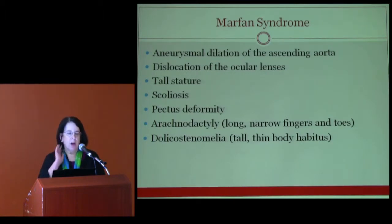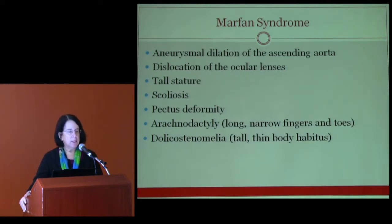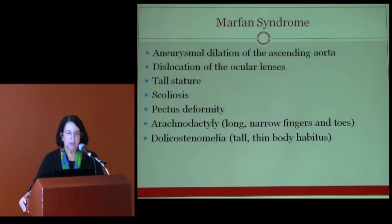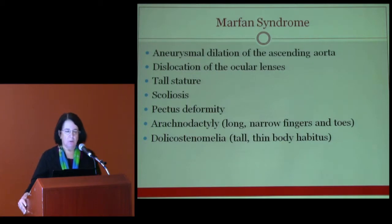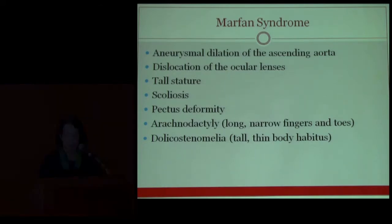Marfan syndrome is characterized by aneurysmal dilation of the ascending aorta, which may lead to dissection and rupture, and without appropriate intervention may be fatal in early to mid-adult life. Dislocation of the ocular lenses is another major diagnostic criterion. Patients are usually tall, often with scoliosis, pectus deformity, arachnodactyly with long narrow fingers and toes, and dolichostenomelia — a tall, thin body habitus.